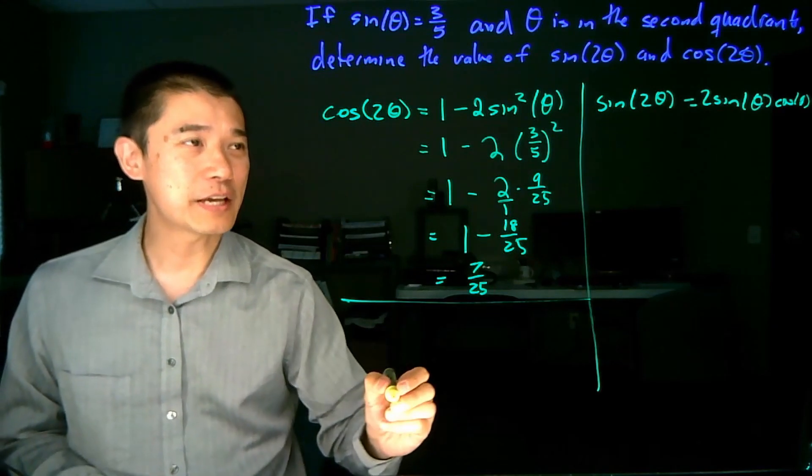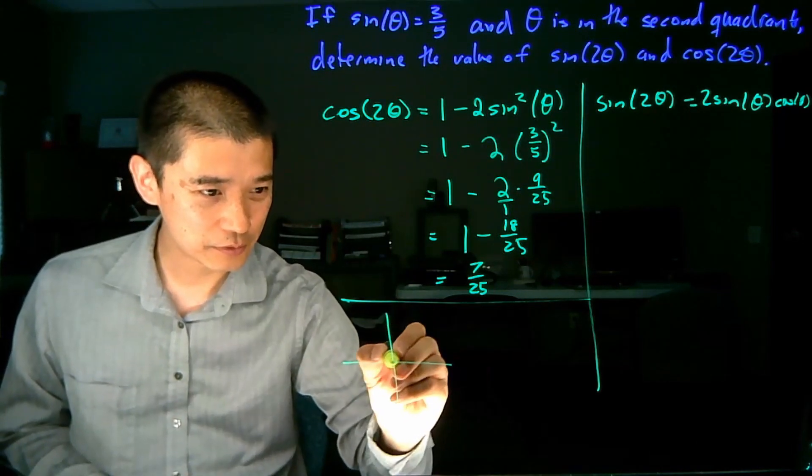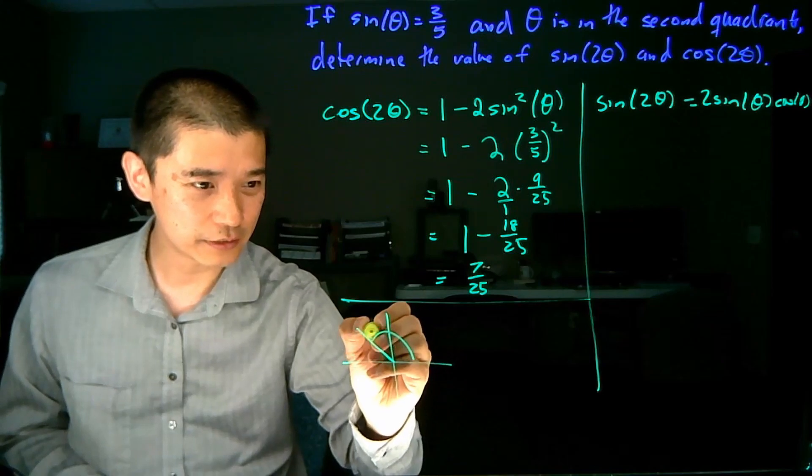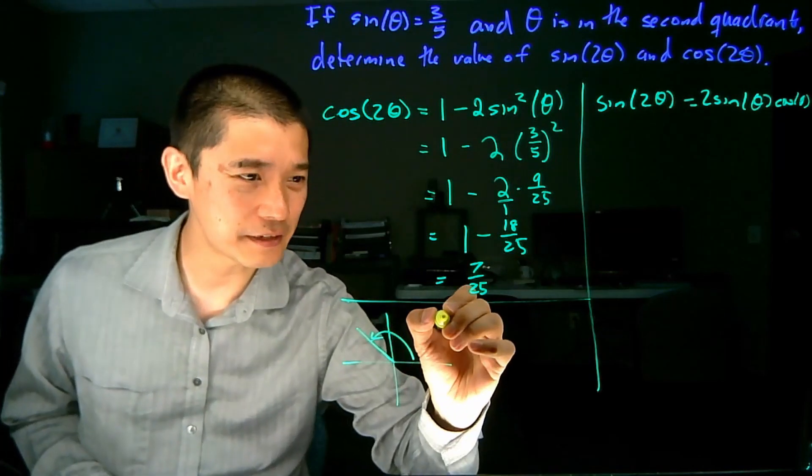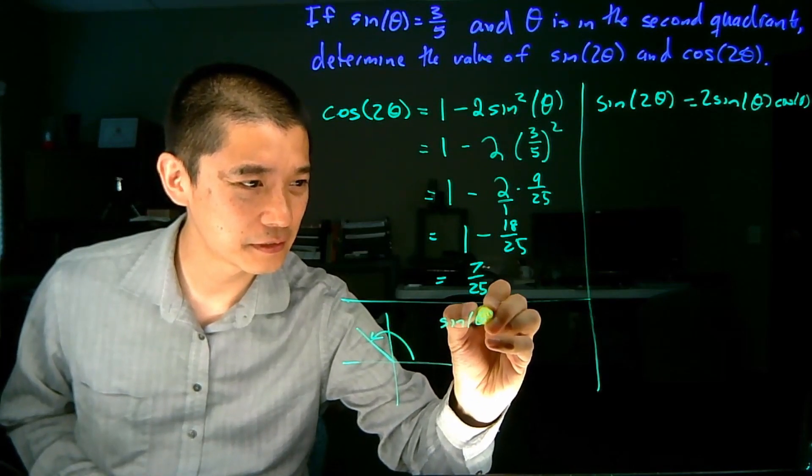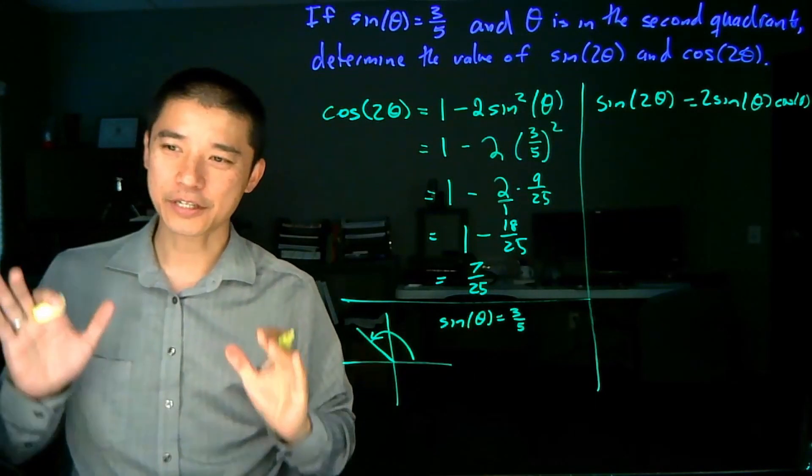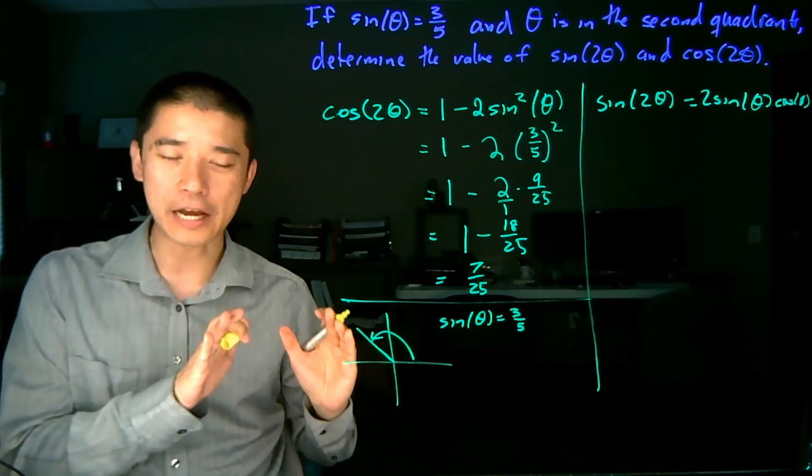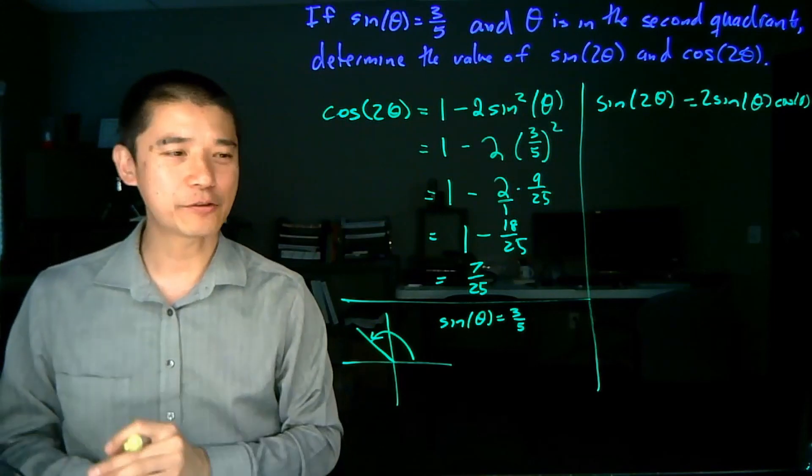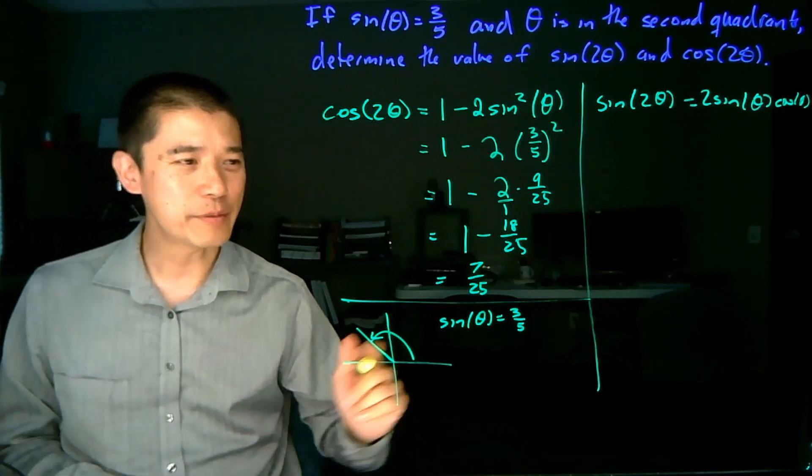So let's take a look. Sine of theta is 3/5 and theta is in the second quadrant. So our theta looks like that. And we know that sine of theta is equal to 3/5. Now, just as before, we can use either an algebraic technique or geometric technique here.